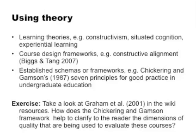By way of an example of this last point, take a break now from listening to me and have a look at the Graham et al. paper — you'll find it in the resources wiki. It describes how some online courses were evaluated using Chickering and Gamson's well-known Seven Principles of Good Practice in Undergraduate Education. See if you agree with me that even if you're not familiar with Chickering and Gamson's Seven Principles or the online courses in question, the use of those seven principles as a theoretical framework makes it very clear to the reader the dimensions of quality being used to analyse those courses.